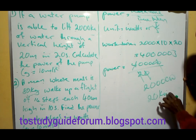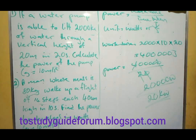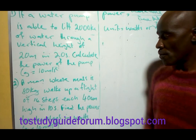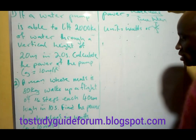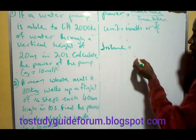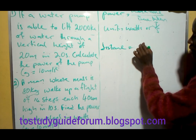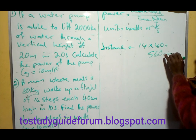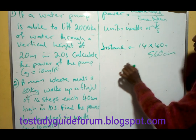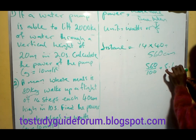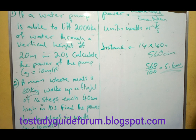That's 20 kilowatts. For the second question, an 80 kg person walks up a flight of 14 steps, each 40 cm high. To get the total distance, we calculate 14 times 40, then convert to meters, giving us 5.6 meters.